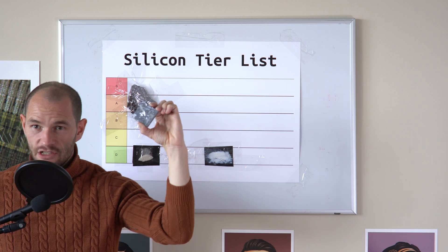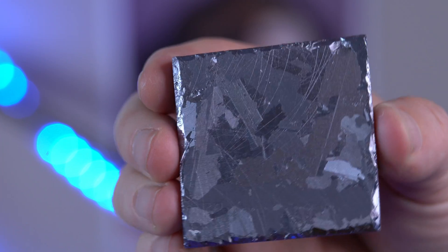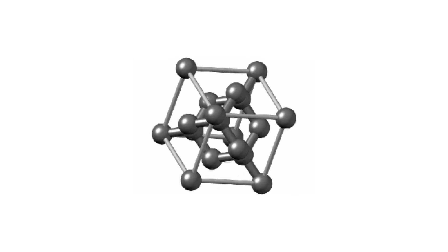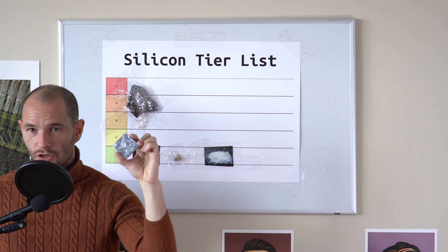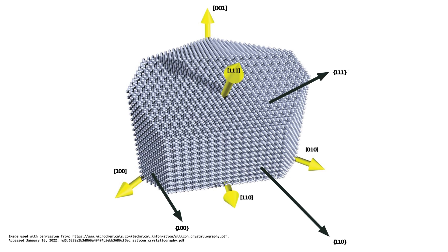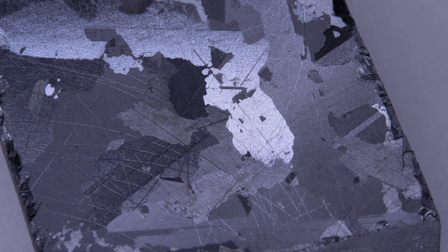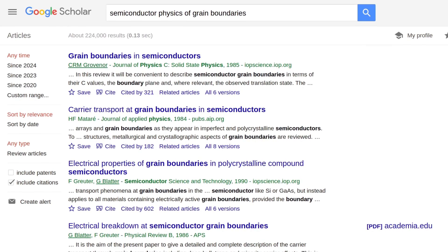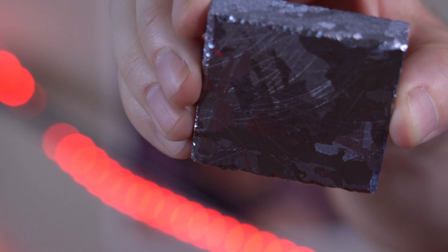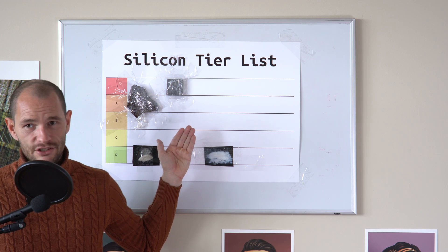Next is a piece of etched polysilicon. This is a piece of polysilicon that's been cut and polished in such a way that reveals the underlying grain boundaries. Silicon has a diamond cubic crystal structure. So if you heat up a piece of silicon and let the atoms move around, the first few pieces of the silicon to freeze will form random crystal orientations. These will propagate outward until they meet another crystal boundary. In the case of silicon, grain boundaries can lead to very interesting semiconductor physics. Etched polysilicon looks really cool when you move it in the light. For this reason, it's a definite S tier silicon.